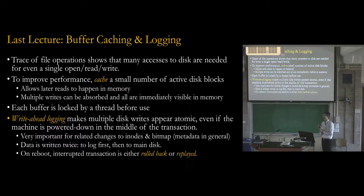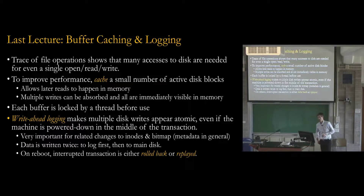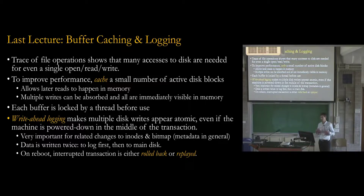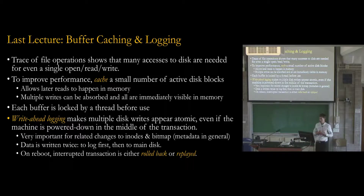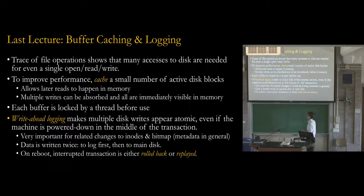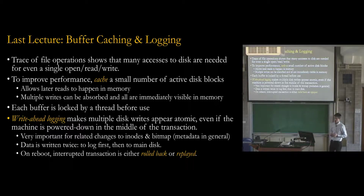The solution we came up with is called the buffer cache. The idea is to keep a small number of active disk blocks in memory — a familiar solution, similar to what we did with virtual memory and swapping. If you have those disk blocks in memory, things can happen quickly. If you have multiple accesses to the same blocks, those can reuse the same cached blocks in memory. If you have multiple writes that happen to the same block, you don't need to write every single one to disk, or they can happen in the background. After your first write to memory, you can start reading from memory even if the write to disk hasn't completed, as long as the updated version is in memory and you check the memory cache first before the disk.